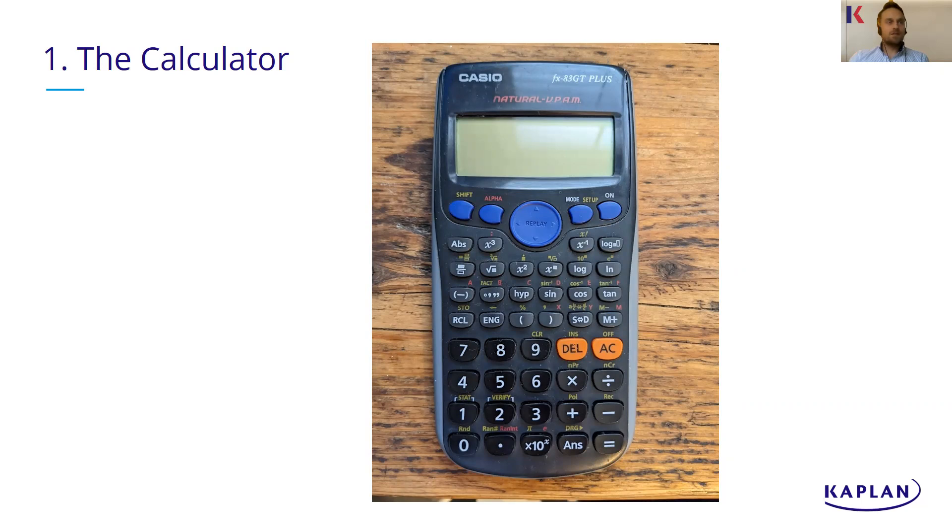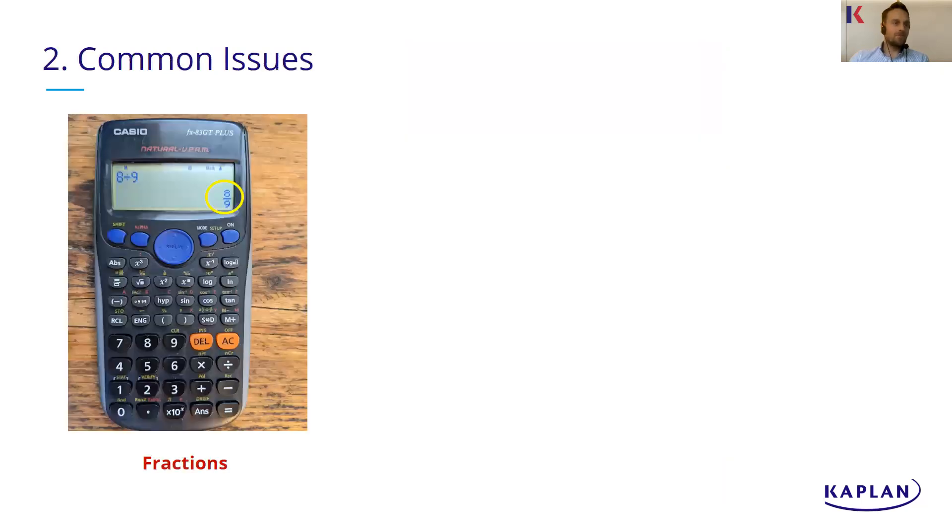Now let's have a look at some of the issues that people often have then. The first one is that answers are displaying as a fraction which in itself isn't a problem, but if the question is saying state your answer to two decimal places or you need that to put into another working, that can be a bit of a pain. So some people show as a fraction.